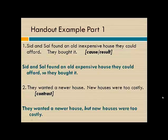For modeling, you can use the handout. There are two parts to the handout, so you could go over a couple of examples from each part with the students. For instance, the first part of the handout gives students two different sentences as well as the relationship that the coordinating conjunction should show. For example: 'Sid and Sal found an old, inexpensive house they could afford. They bought it.' The students are then asked to combine these using the cause and result relationship: 'Sid and Sal found an old, inexpensive house they could afford, so they bought it.'